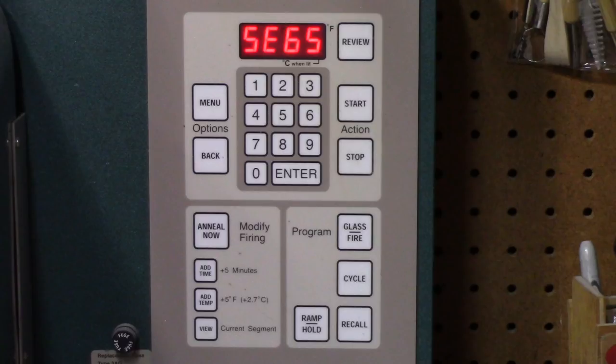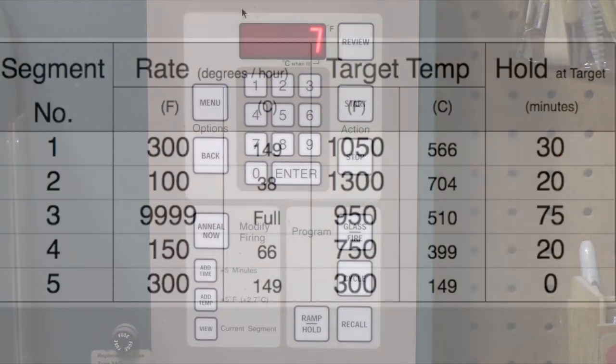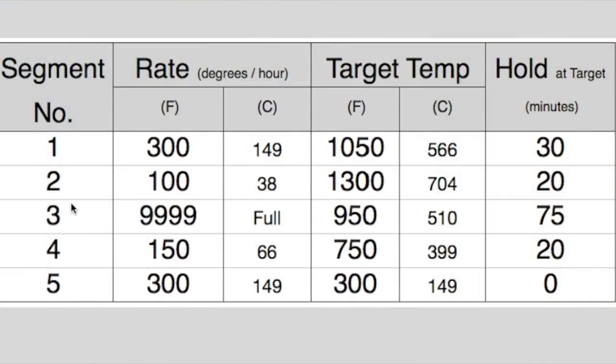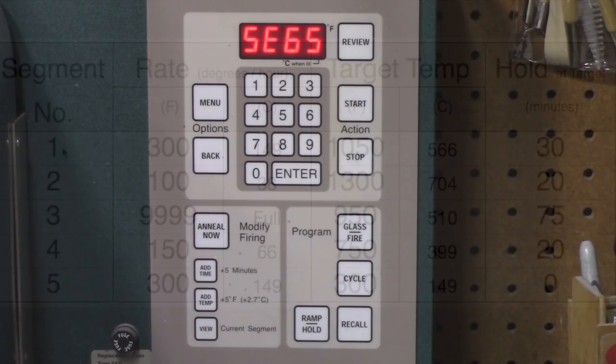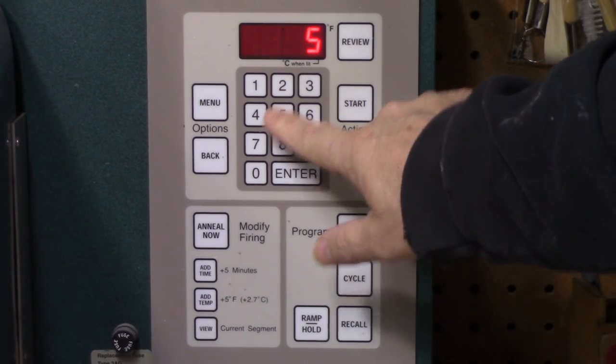Now it says SEGS followed by a number. How many segments does the schedule have? Five, right? So we press 5, then ENTER.